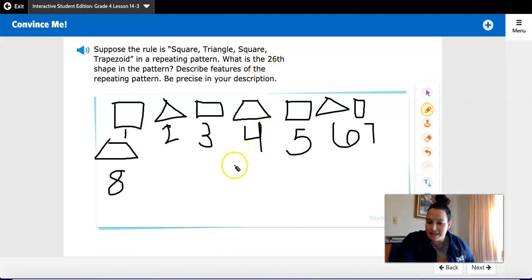So is 26 a multiple of 4? No. So let's see if we can try and find out what this 26 place is. Now if you watch the visual learning, you will know that you can take the place, 26, and divide it by the number of shapes in this pattern.